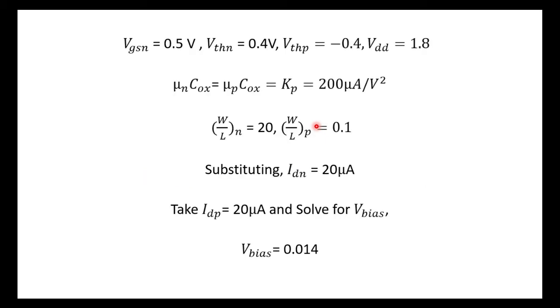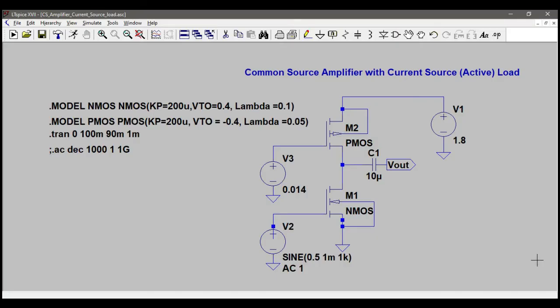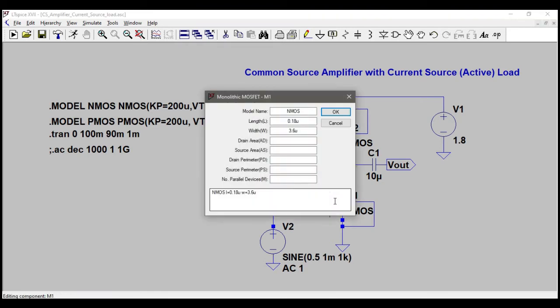So now we are in LTSpice. I'll keep this file, the schematic file, in the description. You can download the file and use it. Let's check the values which I have given here. The L and W are 0.18u and 3.6u, which makes it W/L 20.